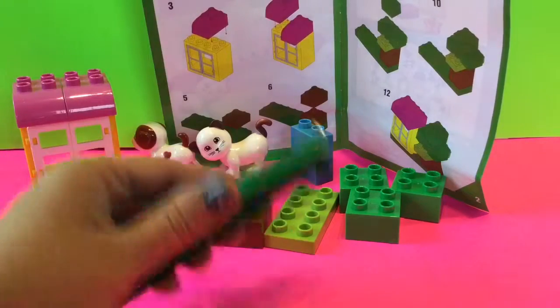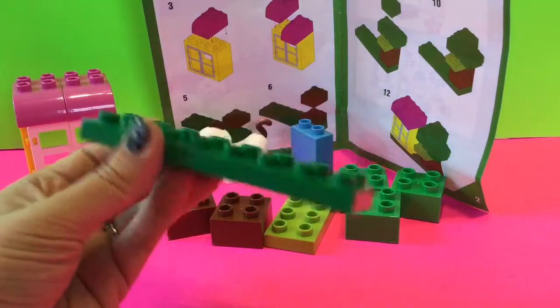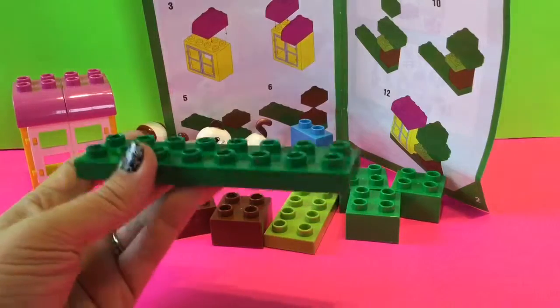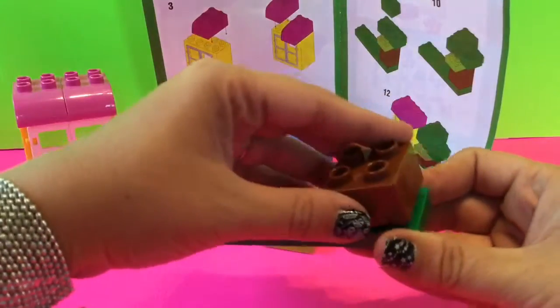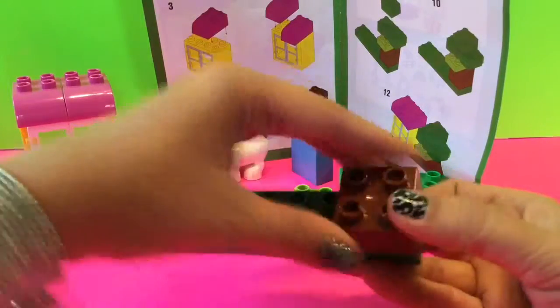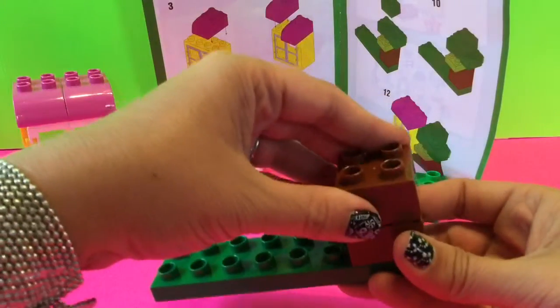The next step, step five, says I take this long green piece and put two brown pieces on top of it. I'm gonna take this brown piece and put it on top of the end, then take this other brown piece and put it here.